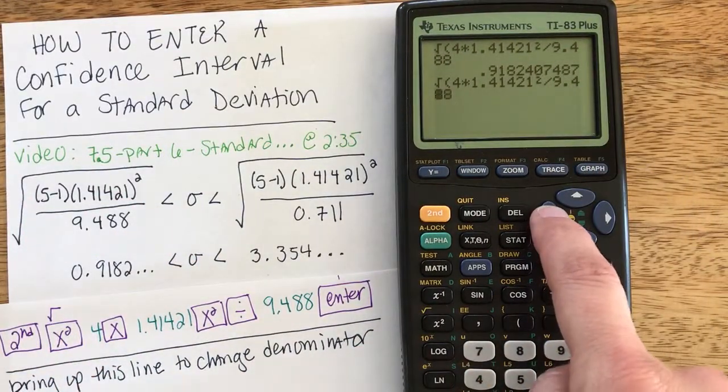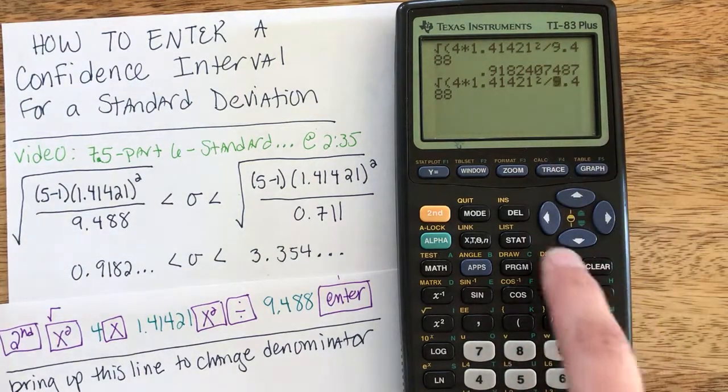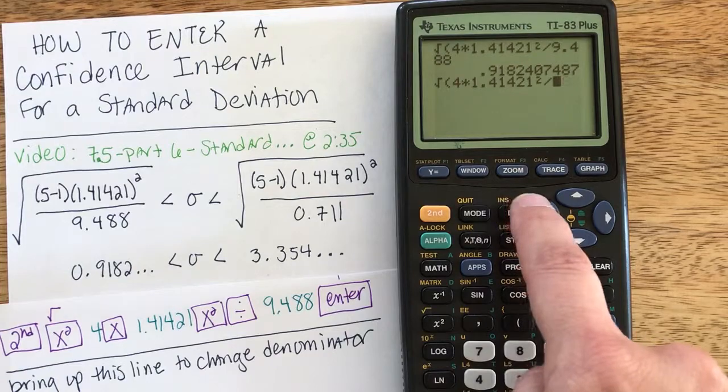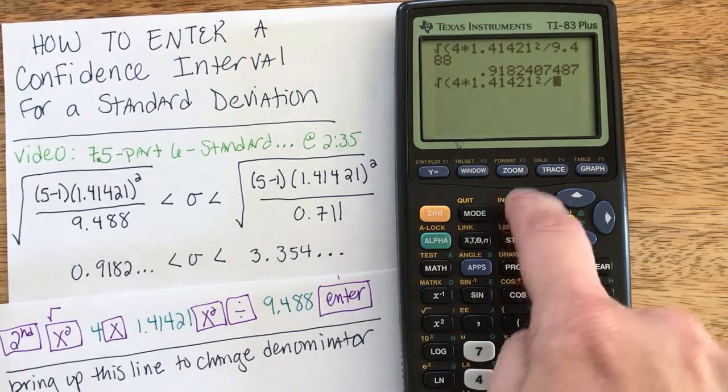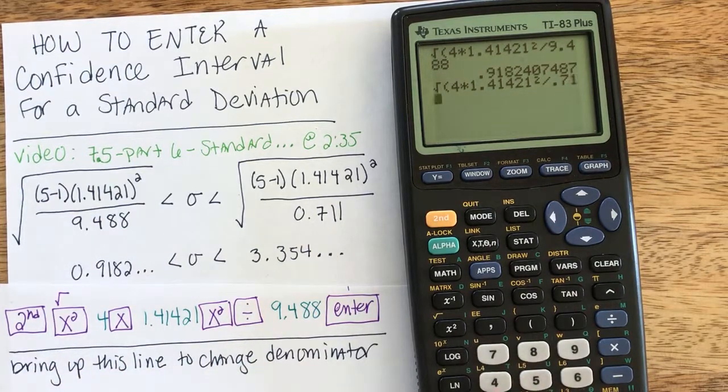And now I can back arrow all the way to where my denominator had started with the 9. I'm going to hit delete until each digit is gone. I can keep hitting delete and I won't lose anything extra. But now I can go ahead and type in the 0.711.